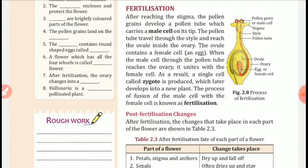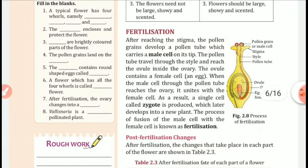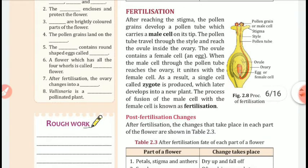The pollen tube travels through the style and reaches the ovule inside the ovary. The ovule contains the female cell, or an egg. When the male cell through the pollen tube reaches the ovary, it unites with the female cell.